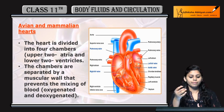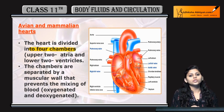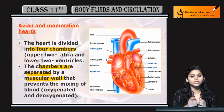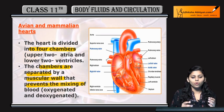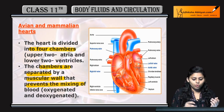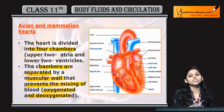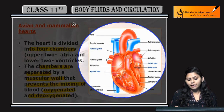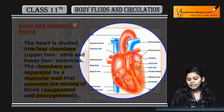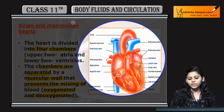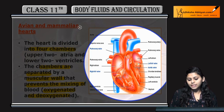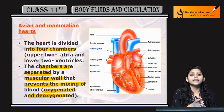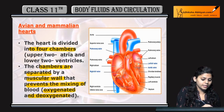Coming to the avian or mammalian heart — it is 4-chambered: two upper atria and two ventricles. The chambers are separated by muscular walls, and these muscular walls prevent the mixing of oxygenated and deoxygenated blood. In the diagram you can see: left atrium, right atrium, left ventricle, right ventricle, vena cava, and superior vena cava. The septum is present, and due to this muscular wall, mixing of oxygenated and deoxygenated blood does not occur.